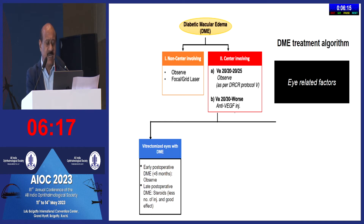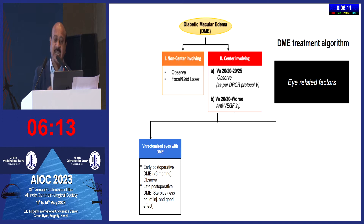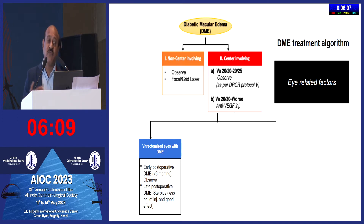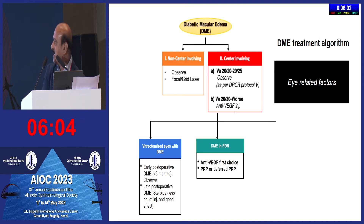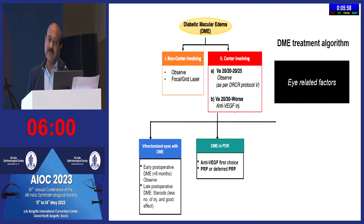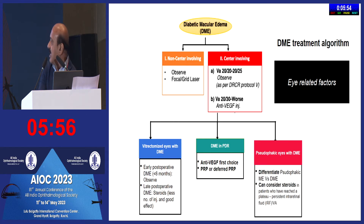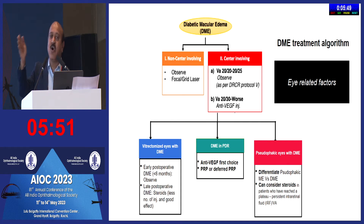For eye-related factors: in vitrectomized eyes, absorption of anti-VEGF will be very fast, so long-acting agents and implants are better in these cases. For DME with PDR, anti-VEGF is definitely the option to choose. In pseudophakic eyes, you should identify whether it is CME or DME — this identification must be done before committing to management.